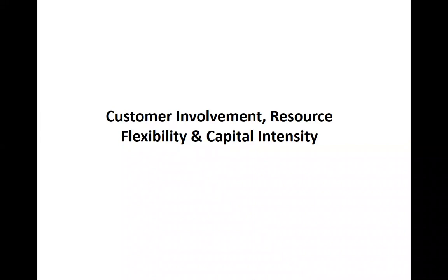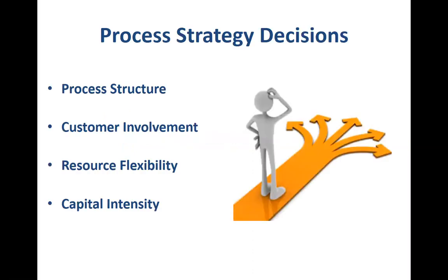Hello and welcome. In this presentation, I'll be talking about customer involvement, resource flexibility, and capital intensity. As part of the process strategy decisions, process structure, customer involvement, resource flexibility, and capital intensity are important dimensions of these decisions. We have looked at process structure decisions elsewhere. Now, we're going to look at the potential ways in which organizations can engage these other aspects within their process strategy decisions, starting with customer involvement.